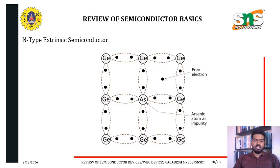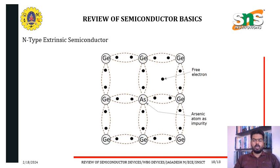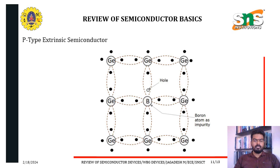Here is an example of an N-type extrinsic semiconductor, which has an additional free electron — this is considered a donor impurity semiconductor. And a P-type semiconductor has only three valence electrons in the outermost orbit, so it creates one hole, which is a positively charged particle.